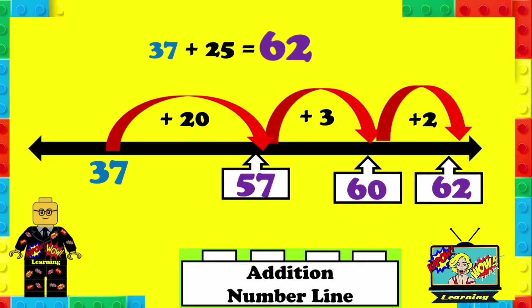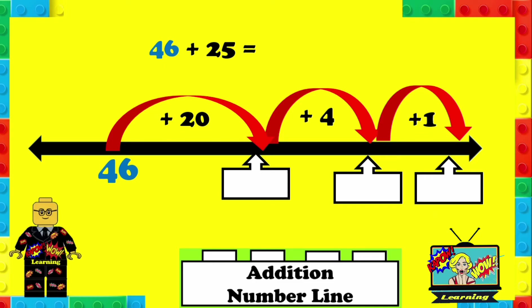Let's have a look at this one. You can pause this and then play it to see if you can do it. It's 46 plus 25. So 46, we're going to plus the tens first, so 46 plus 20 is 66.